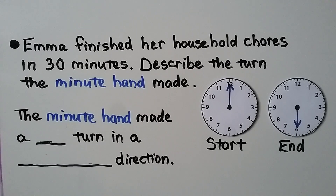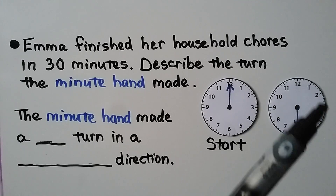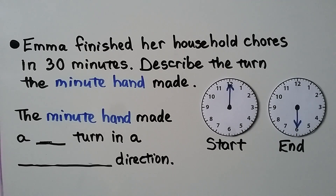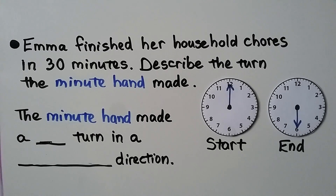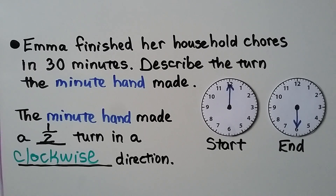Emma finished her household chores in 30 minutes. Describe the turn the minute hand made. It started at the 12, and the minute hand went around and is now on the 6. So the minute hand made a half turn — if you said half, you're right. And what direction did it turn? It's a minute hand going to the 6 — if you said clockwise, you're right. It made a half turn clockwise.